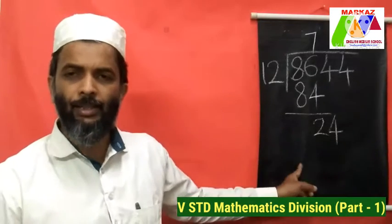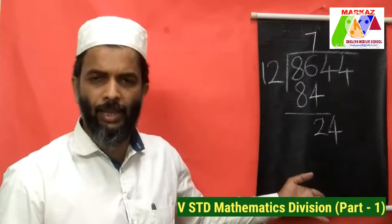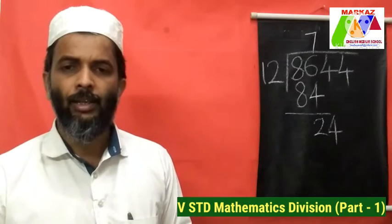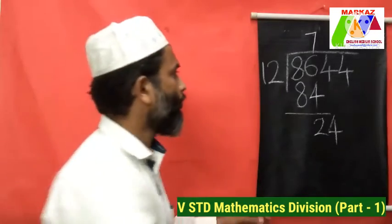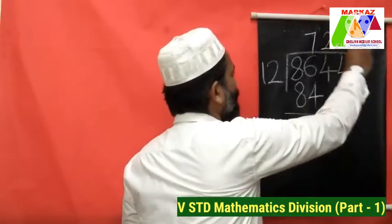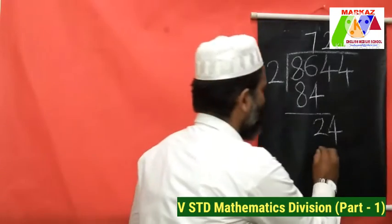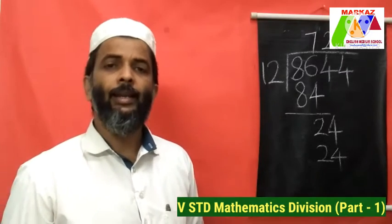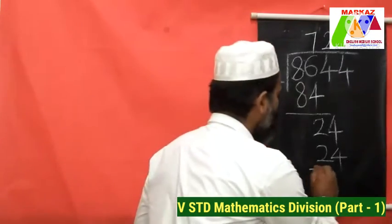Now our dividend is 24. We are repeating the whole process. 24 divided by 12: 12 ones are 12, 12 twos are 24. So the second digit of the quotient is 2. 2 then multiply — 2 into 12 is equal to 24.